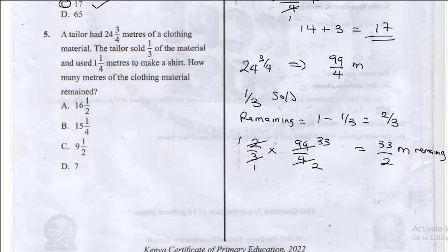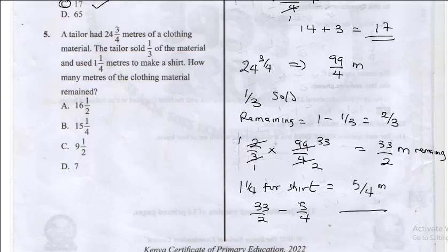From the 33/2 meters remaining, he used 1 and 1/4 meters to make a shirt. Converting 1 and 1/4 to an improper fraction gives 5/4. So we calculate 33/2 minus 5/4. Taking the LCM as 4: this becomes (66 minus 5) over 4, which equals 61/4. Converting 61/4 to a mixed number gives 15 and 1/4. Final answer: 15 and 1/4 meters. The correct answer is B.